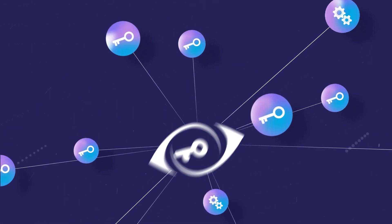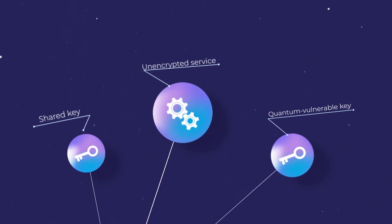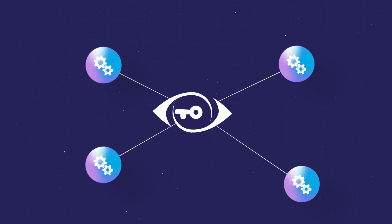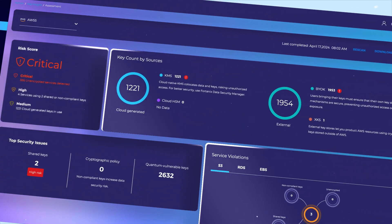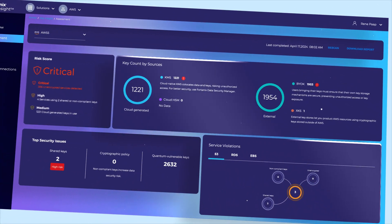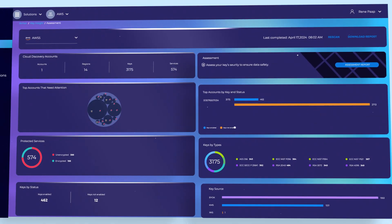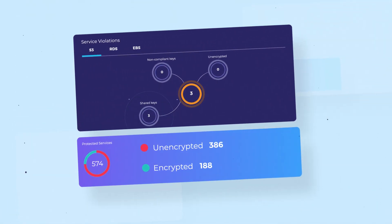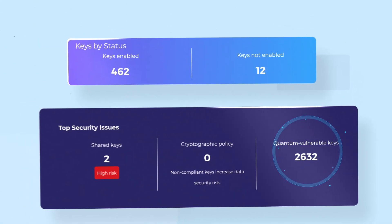It starts by automatically discovering encryption keys across your hybrid, multi-cloud environment, and how they map to cloud data services. An intuitive dashboard highlights top data exposure risks and provides all details of your cryptographic security posture, such as unencrypted services, shared keys, keys without autorotation, or whether a key is quantum vulnerable.